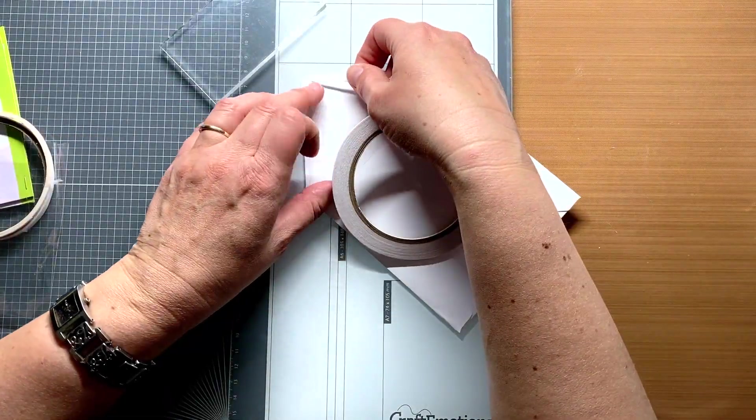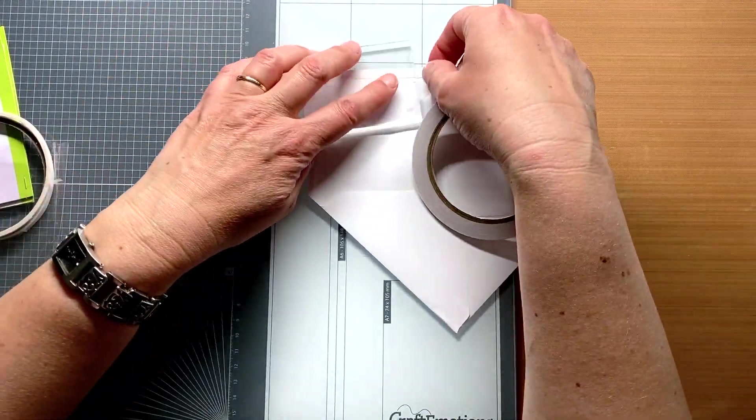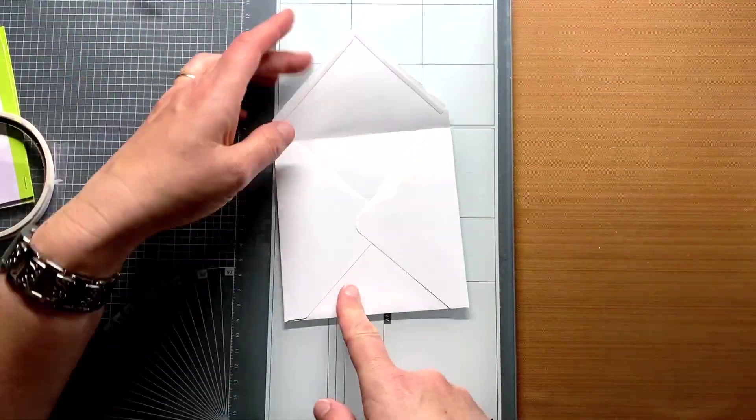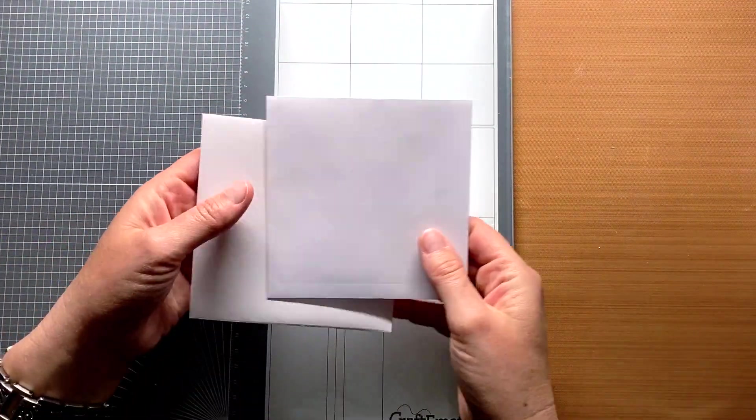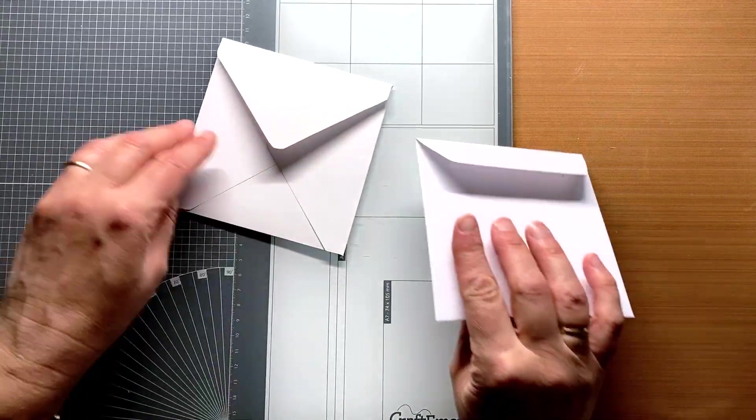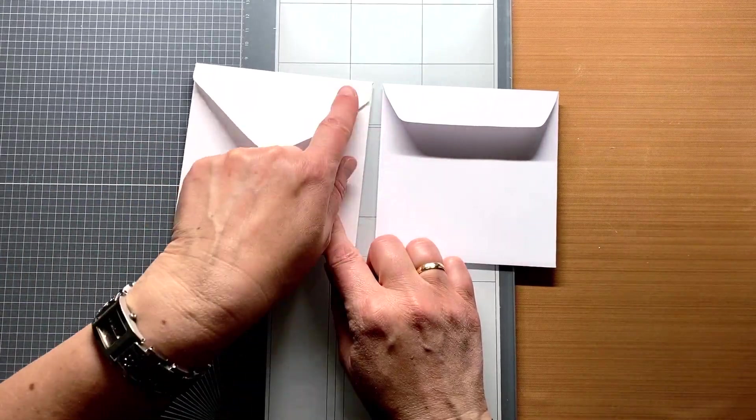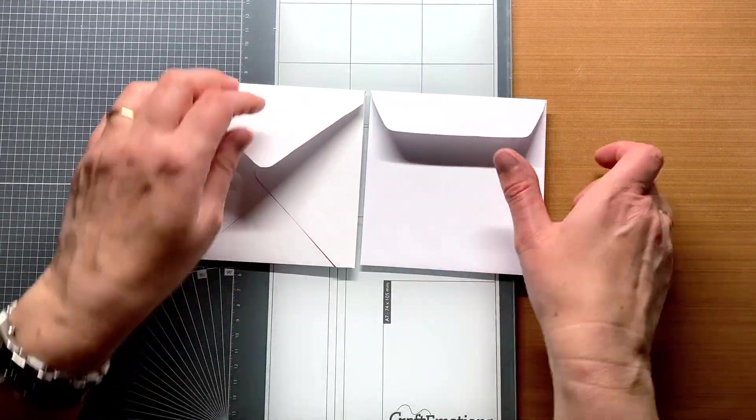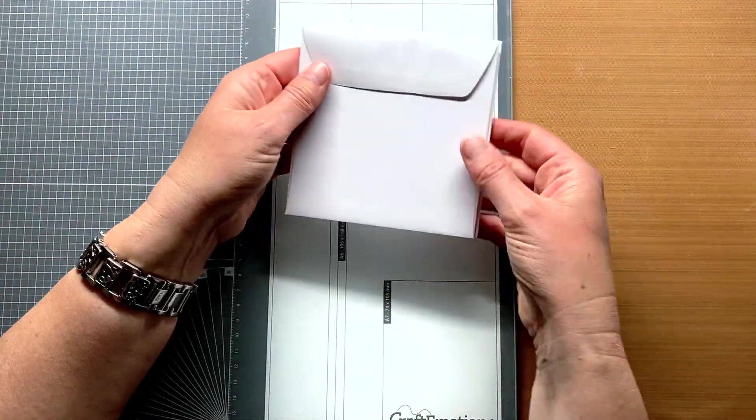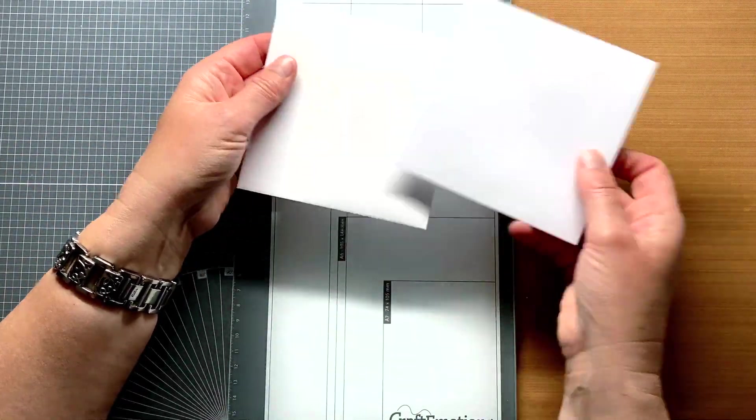Actually the side flaps should have been put in first and the bottom flap last. I also put double sided tape on the top flap, so the envelope can be sealed when shipping. You see, a homemade envelope, the same size as the store bought one, only the flap is different.